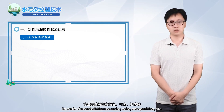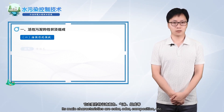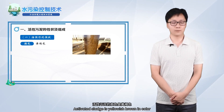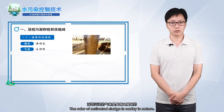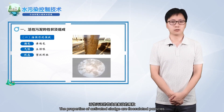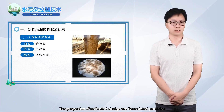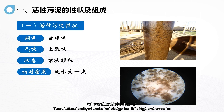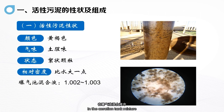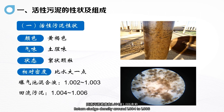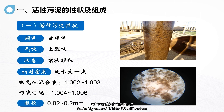Its main characteristics are color, odor, composition, etc. Activated sludge is yellowish-brown in color, and its odor is earthy in nature. The properties of activated sludge are flocculated particles. The relative density is a little higher than water. In the aeration tank mixture, the density of activated sludge is around 1.002 to 1.003; return sludge density is around 1.004 to 1.006. Particle size of activated sludge is probably around 0.02 to 0.2 millimeters.